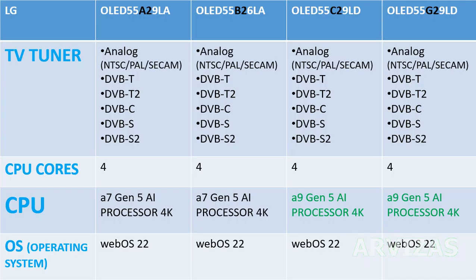TV tuner: Analog with PAL, SECAM, DVB-T2, cable, and satellite options. CPU cores: 4 for all models. A2 and B2 models have the A7 Gen 5A processor 4K, while C2 and G2 models have the higher A9 Gen 5 processor.